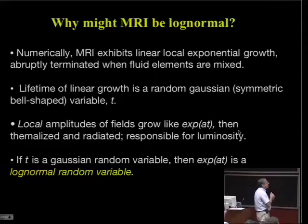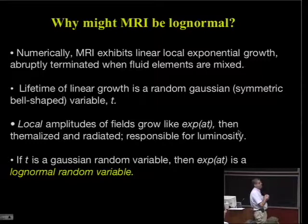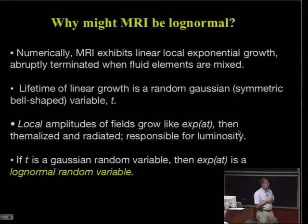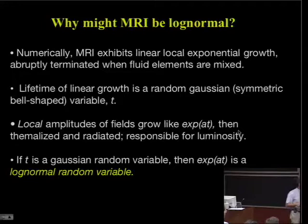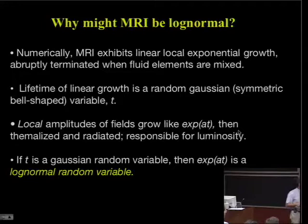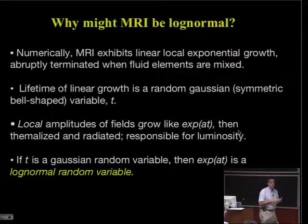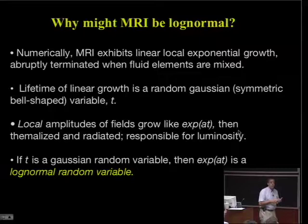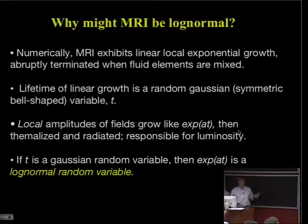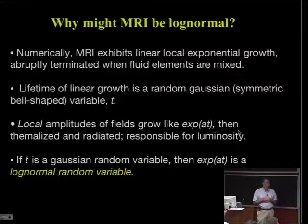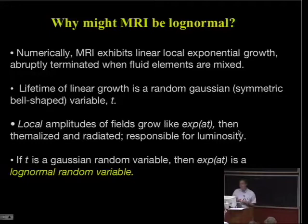If these are then thermalized and radiated, then it is the amplitudes that are responsible for the observed luminosity. And if t is a Gaussian random variable, then the exponential of a times t is distributed as a log-normal random variable. So maybe there's a connection along those lines. But I point this out as an area which is completely unexplored, and is a possible way to place the numerical simulations that we're so interested in on a firmer observational plane.